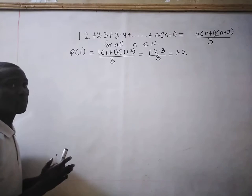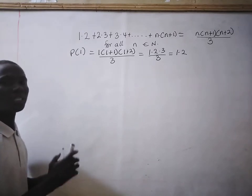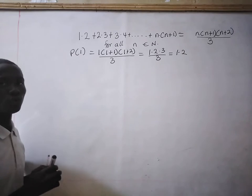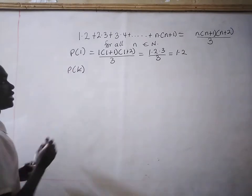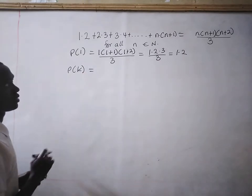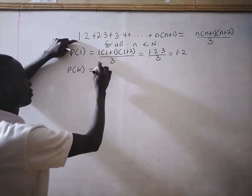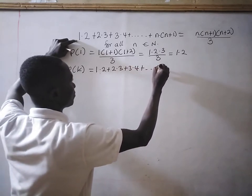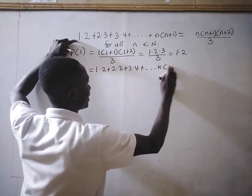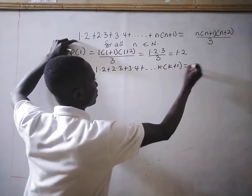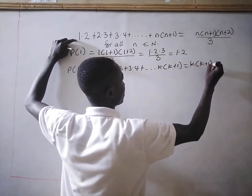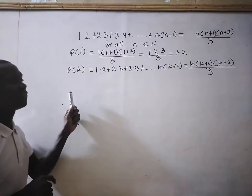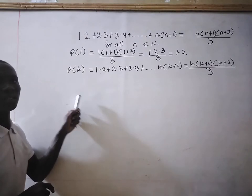Now, after the base step, we will look at the inductive hypothesis. That is when we assume that n=k is also true. So the inductive hypothesis, P(k), gives us: 1×2 + 2×3 + 3×4 + ... + k×(k+1) = k×(k+1)×(k+2) all divided by 3.